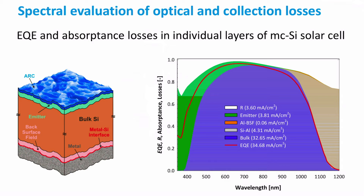At short wavelengths, there is significant parasitic absorption in the emitter, shown in green. Part of this green curve does contribute to the EQE, but not all of it. In the emitter layer, losses of photo-generated carriers due to recombination occur before their collection. At long wavelengths, photons have energy close to that of the band gap, so the absorption coefficient becomes small and the probability that these photons are absorbed is low. As a result, many photons pass through the absorber layer and are absorbed in the metal back reflector, shown in grey.